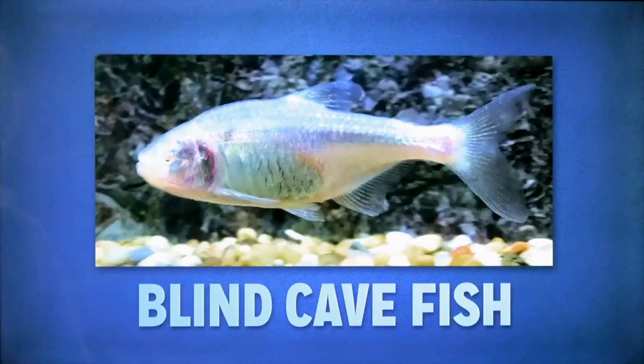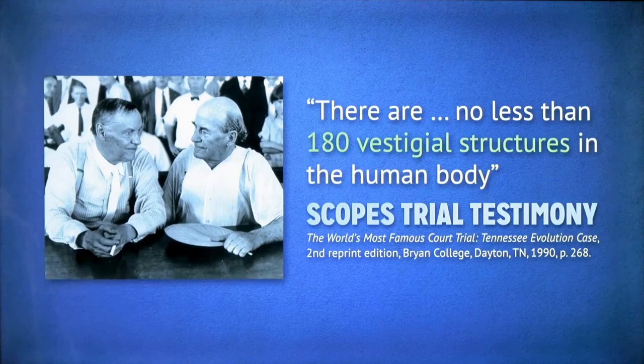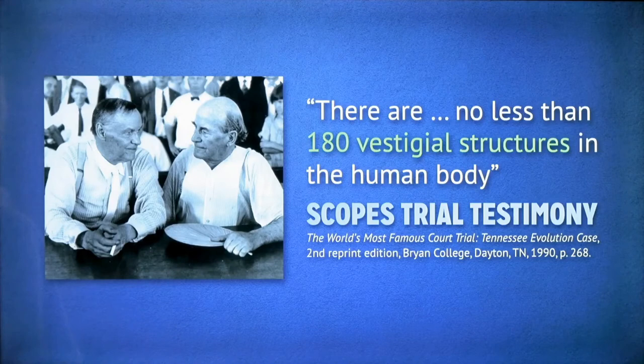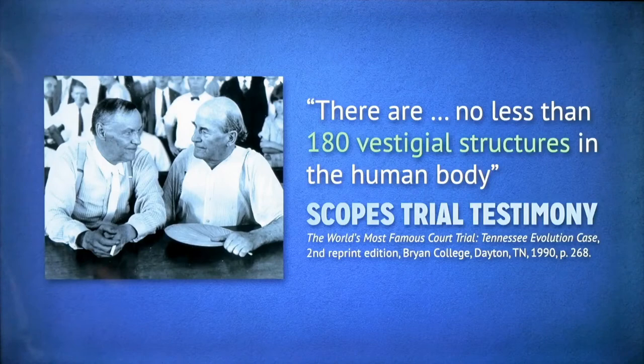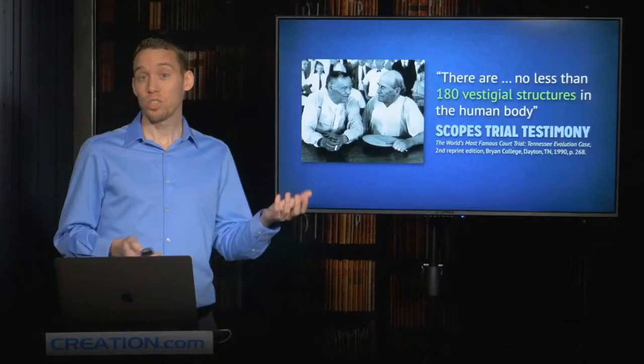But we would say that evolutionists have been a bit over-enthusiastic in finding all these structures that they don't immediately identify a function and then assuming that there is no function. For instance, back at the time of the Scopes trial, that famous court trial in Dayton, Tennessee, they had a number of scientists get onto the stand and give their arguments for evolution. One of their key pieces of evidence at the time was what this man said: there are no less than 180 vestigial structures in the human body alone. Of course, since that time, we've discovered functions for essentially all of those supposed vestigial structures.